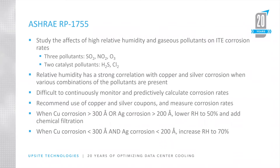Because of the different permutations of catalysts, pollutants, relative humidity levels, etc., it's very difficult to set up continuous monitoring and predictive models to determine what your corrosion rates may be. So the recommendation — the update to the thermal guidelines — is that if you suspect you may have any of these pollutants present in your area, you should install copper and silver coupons in the facility and measure the corrosion rates.